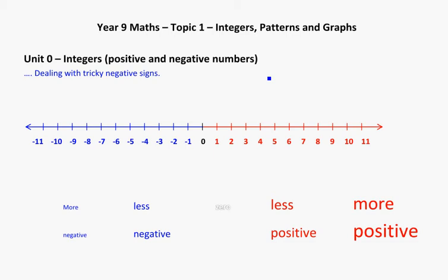We're beginning the Year 9 topic, the very first topic for the year: Integers, Patterns, and Graphs. I'm going to call this Unit 0 really because integers is kind of just revision. I just want to make sure we're remembering how to deal with positive and negative numbers. That's the basics of it. Integers just means numbers that include positive and negative.